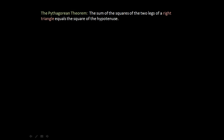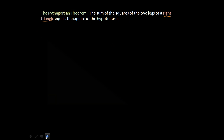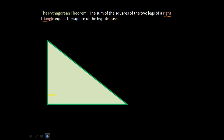The Pythagorean theorem is: the sum of the squares of the two legs of a right triangle — and this only works for right triangles — equals the square of the hypotenuse. So let's look at a right triangle. The legs are these two lines here. You'll notice the 90-degree box, which means this leg is perpendicular to that leg, so this angle is 90 degrees.